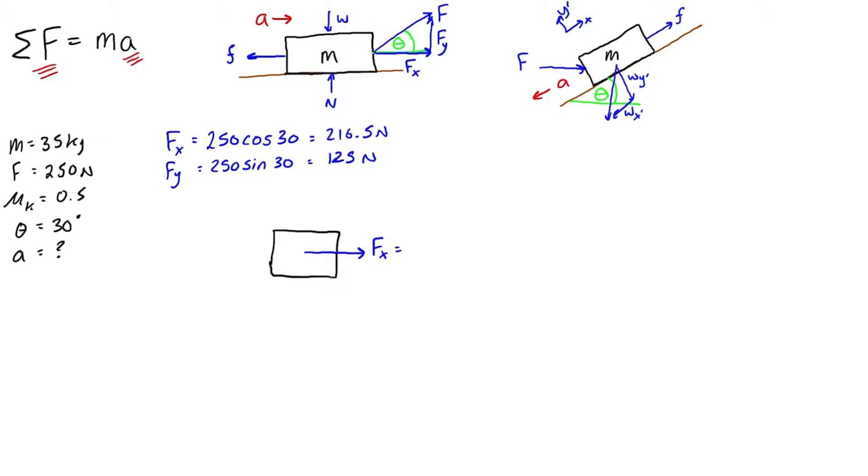We've got fy pulling up on it at 125 newtons. We're going to have the force of the weight w. We're also going to have a normal force from the surface that it's on. And we're going to have the friction coming out like that, opposing the direction of acceleration, which will definitely be straight to the right.